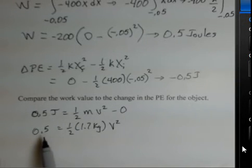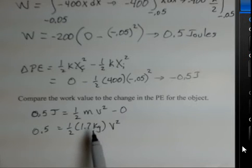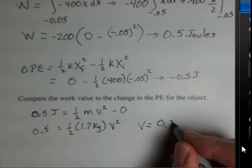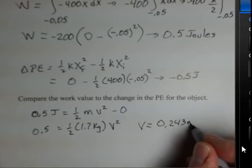So we multiply both sides by 2, divide both sides by 1.7, and then take a square root. You should do this on your calculator. I came up with 0.243 meters per second.